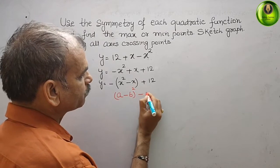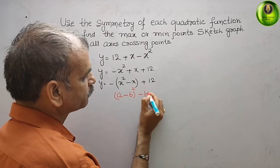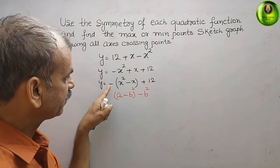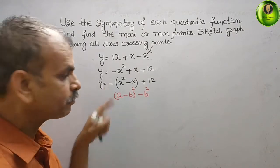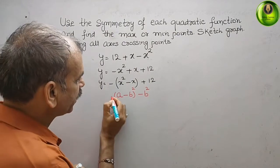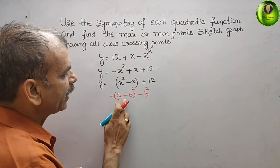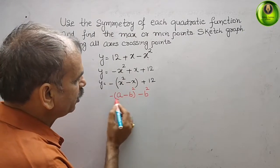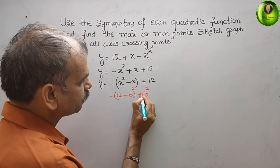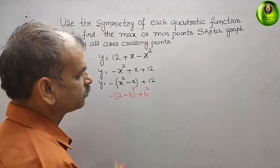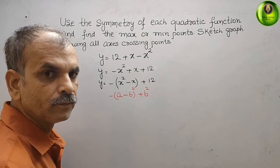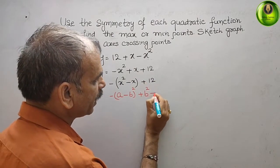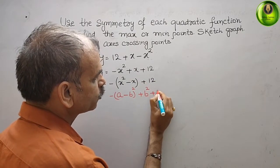We place a negative sign outside, so y equals minus times the quantity in brackets. Minus into minus gives plus, and here we still have plus 12 inside the bracket. We need to express this in the completing the square form.